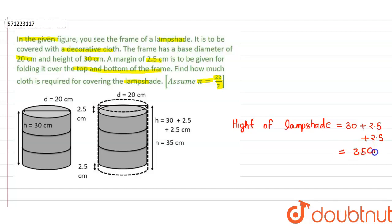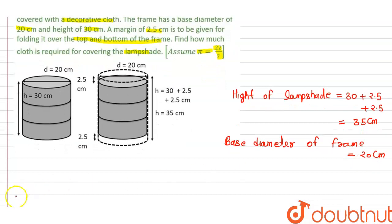We have also given the base diameter of the frame, which is 20 cm. When we find the radius, it will be diameter by 2, that is 20 by 2, which equals 10 cm.